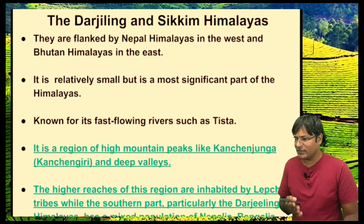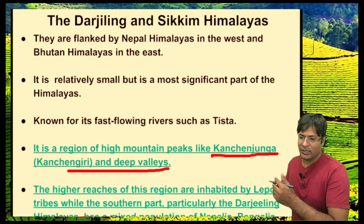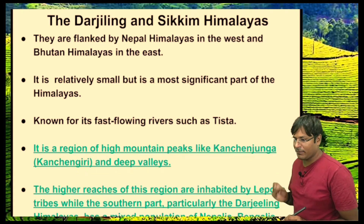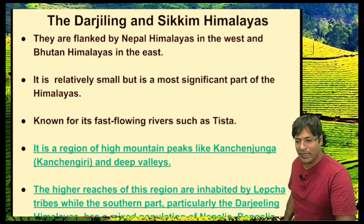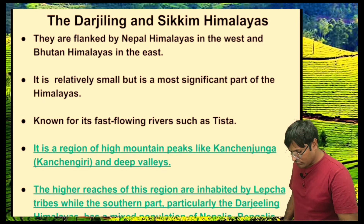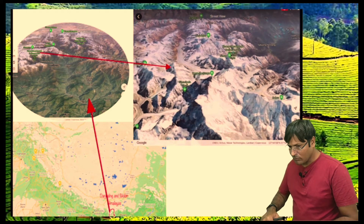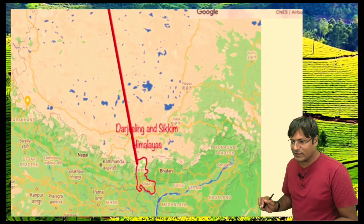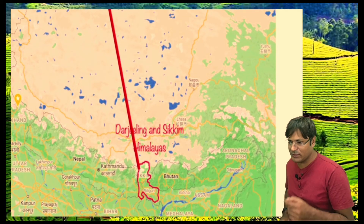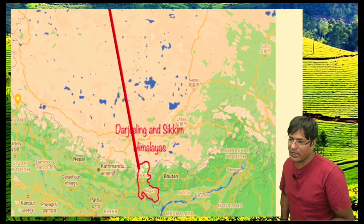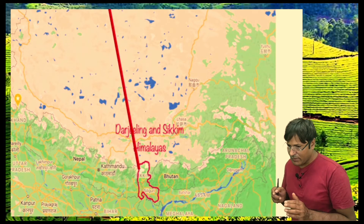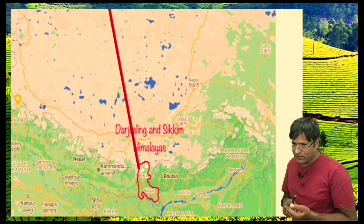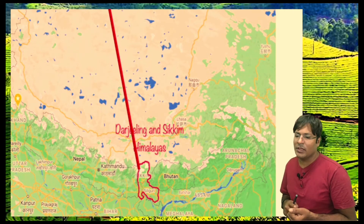This region features high mountain peaks like Kanchenjunga and deep valleys. The first feature is that it has very high mountains and deep valleys. It lies between the Nepal Himalayas in the west and the Bhutan Himalayas in the east. It covers parts of West Bengal and the complete state of Sikkim.